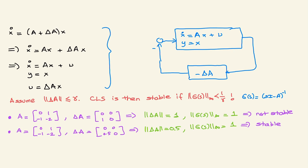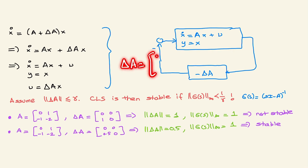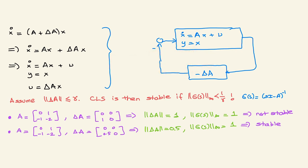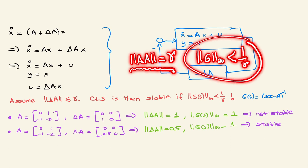In real-world problems you don't know the uncertainties precisely. In general, ΔA has entries delta1, delta2, delta3, delta4 with known minimum and maximum variations. If the norm of ΔA equals gamma, then the H-infinity norm of G(s) must be strictly less than 1/gamma for closed-loop stability. For all perturbations, you need to find this gamma and ensure the product is strictly less than one.